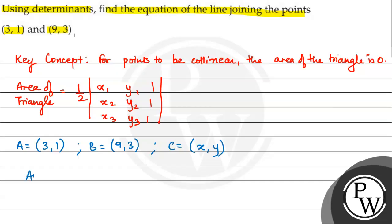So, area — how do I put in the components? Half multiplied by: x1 is 3, y1 is 1, then 1; x2 is 9, y2 is 3, then 1; and x3 is x, y3 is y.